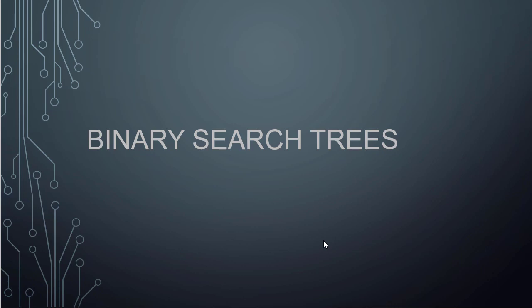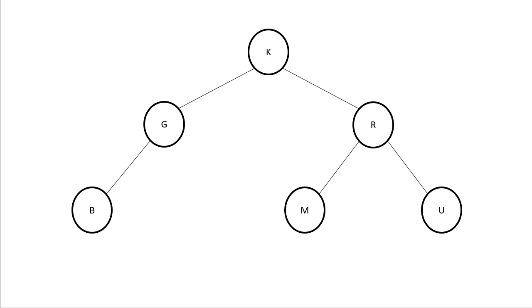In this video, we're going to talk about how linked binary search trees are implemented. Here's an example binary search tree. You can see that g is less than k, b is less than g — by less than we mean it comes before in the alphabet. In the right subtree, we have characters that come after k, so those are all greater: m, r, and u.